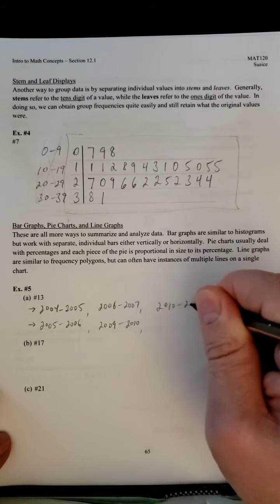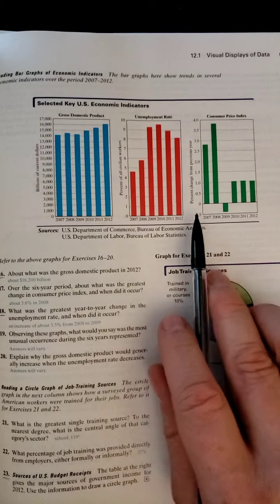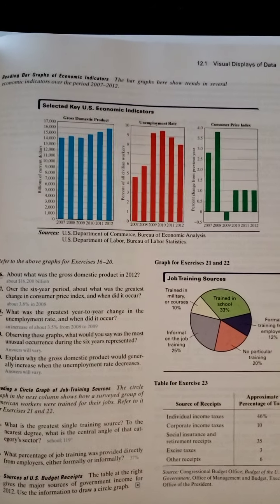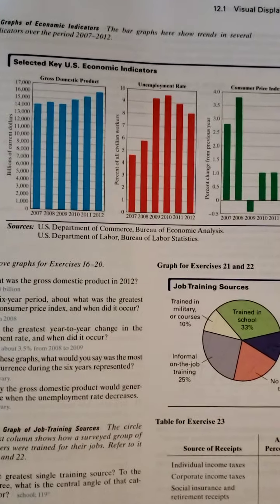Number 17 gets into this set of charts — we've got three of them that we're analyzing: gross domestic product, unemployment rate, and consumer price index. Number 17 says: over the six-year period, about what was the greatest change in the consumer price index and when did it occur?